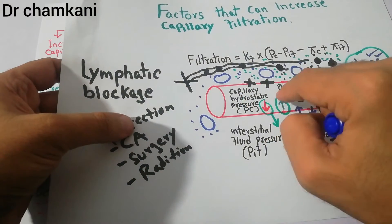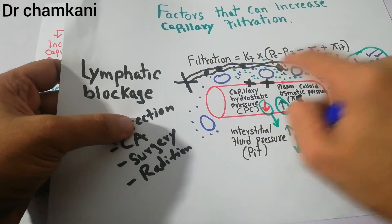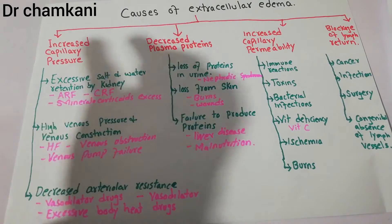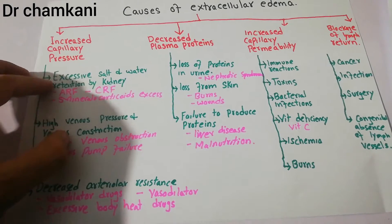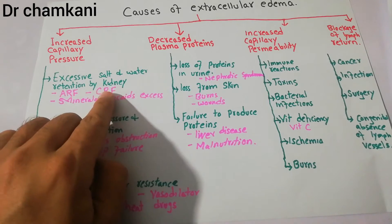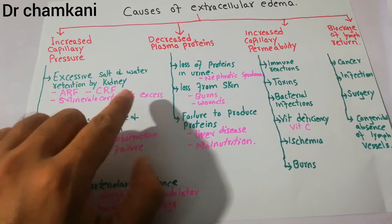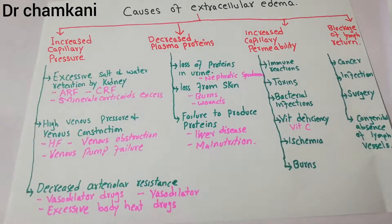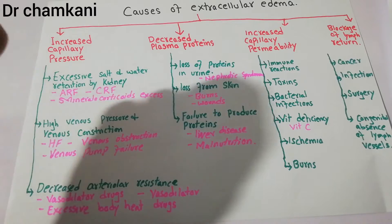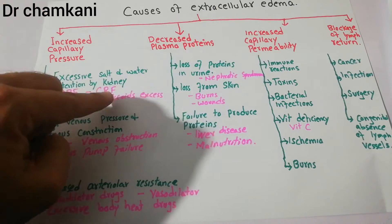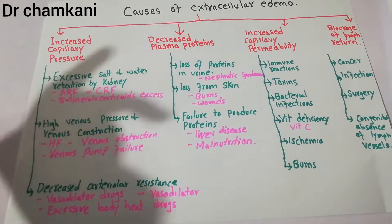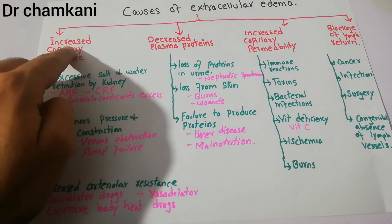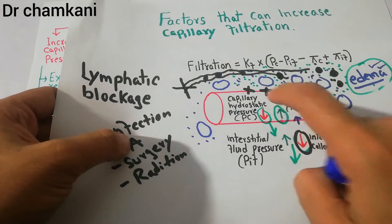The capillary hydrostatic pressure is basically trying to push the fluid out. The causes include excessive salt and water retention by the kidneys, which can occur in acute renal failure, chronic renal failure, or due to mineralocorticoid excess such as aldosterone excess. In these conditions, increased fluid and salt retention leads to increased capillary hydrostatic pressure, pushing fluid out into the interstitium.